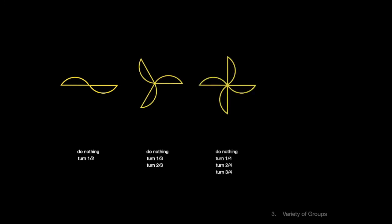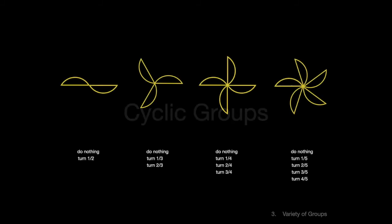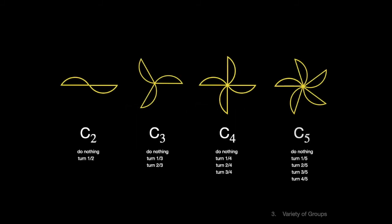Following this pattern, we see we have a whole class of groups. The symmetries of these shapes comprise the most basic kind of group: cyclic groups, as in a cycle. Here's the notation we use to describe them. C2, C3, and so on, where the subscript refers to the number of elements in the group, that is, the order of the group. Cyclic groups come in any order.